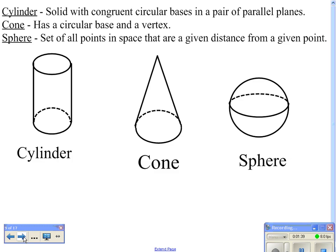Now, in terms of cylinders, cones, and spheres, a cylinder is a solid with congruent circular bases. It is essentially a prism with circular bases. A cone has a circular base and a vertex. Essentially it is a pyramid that has a circle as a base. A sphere is a set of all points in space that are a given distance from a given point, which will be our center. It is basically a three-dimensional circle.